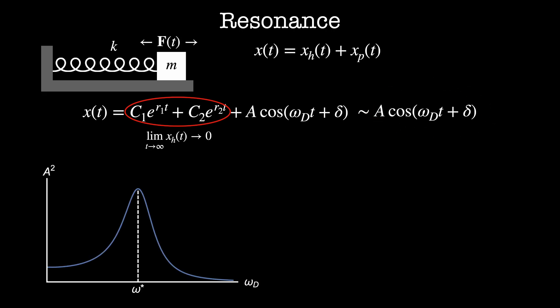Here is a plot of the amplitude squared as a function of omega_d. We assume omega naught, beta, and f naught are fixed, and scan through possible driving frequencies. For small driving frequencies the oscillation amplitude is small and fixed. As we increase the frequency, the amplitude increases until it reaches a peak at some value omega star — a very large amplitude response — and from there it decays to zero. We can find omega star by solving dA by d omega_d equals zero, which gives omega star equals the square root of omega naught squared minus 2 beta squared. This is the frequency that maximizes the amplitude response.